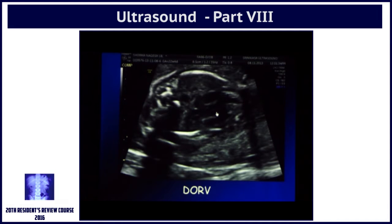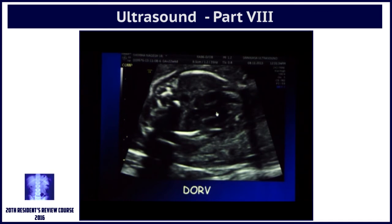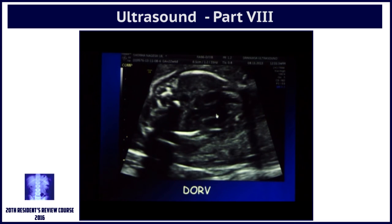In malposed vessels, the aorta is on top and the pulmonary artery is below. So when you take your three vessel view, you either cut through the aorta or cut through the pulmonary artery — you don't see both, you see only one. That is why you saw only one vessel there.